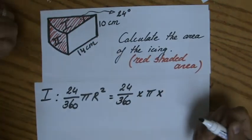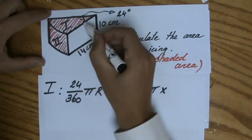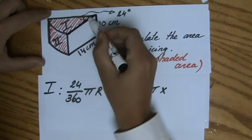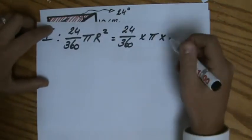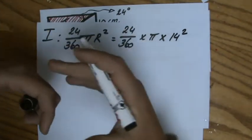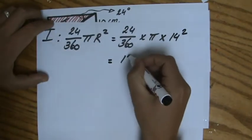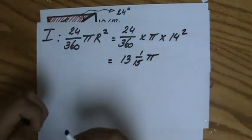I'm going to fill in some blanks: 24 out of 360 times π, and π is a number. What is the radius of my circle? This length is 14, so that is the radius of my circle. So it's times 14 to the power of 2.